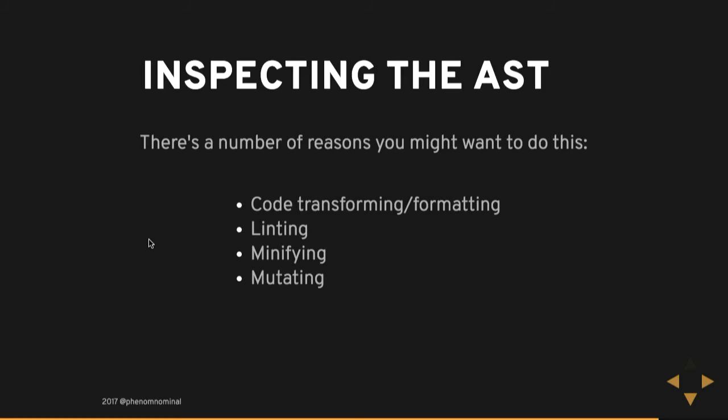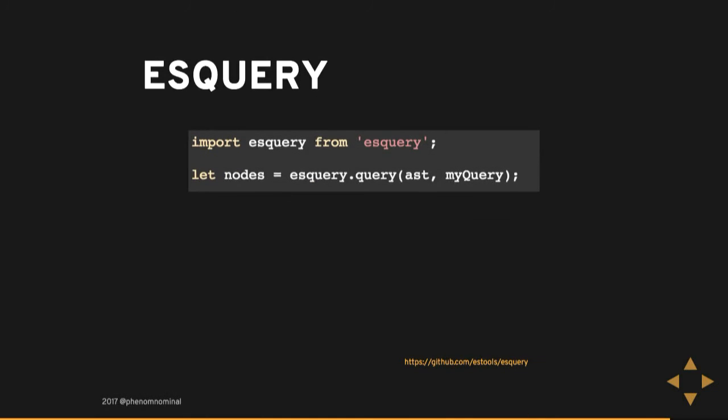Similarly, mutating — there's a thing called Stryker, which is a mutation testing library. It basically parses your code and goes: there's an addition operator, what happens if I make that a subtraction operator and run your tests? You'd think they should fail. So what does that thing look like? One more tool from the magic of NPM: ESQuery.